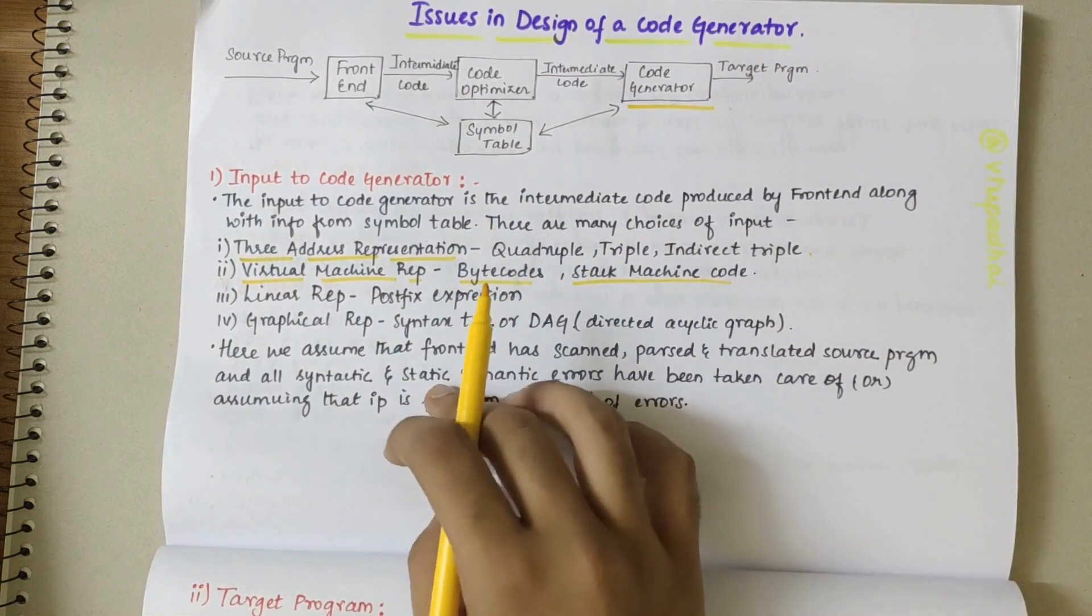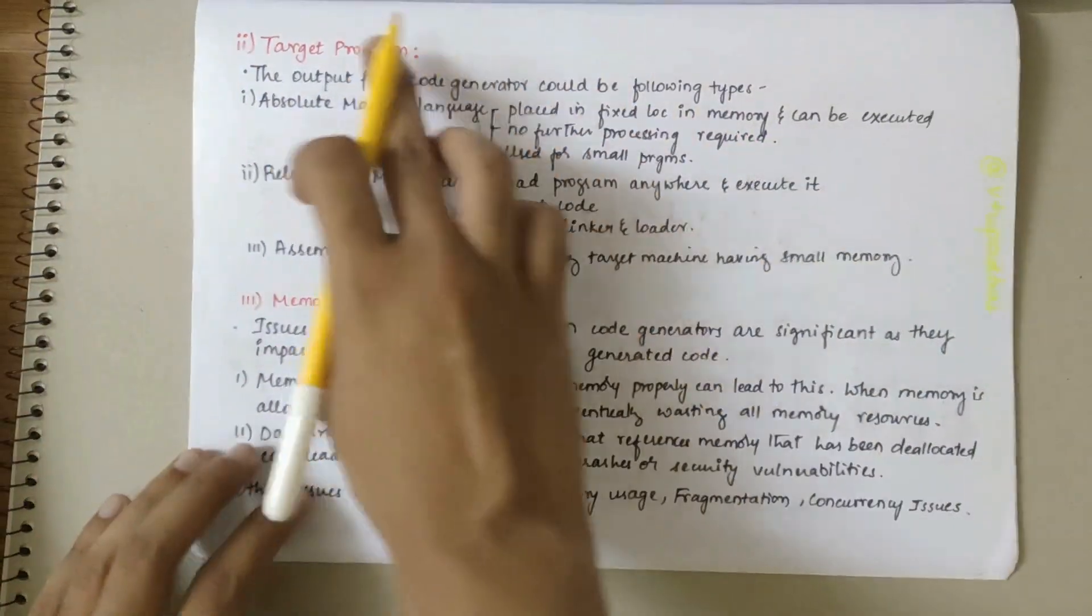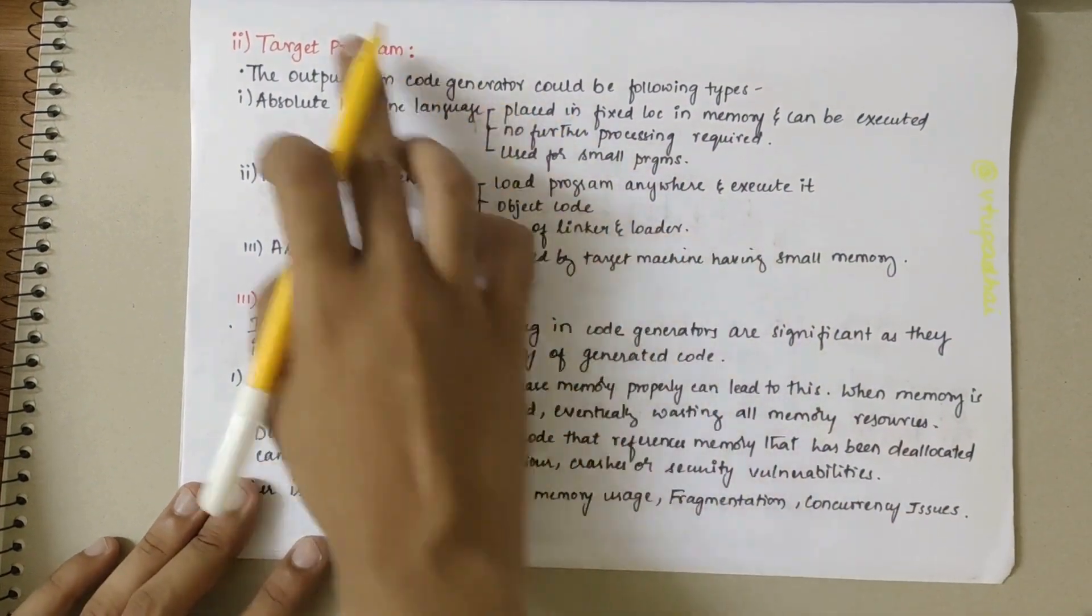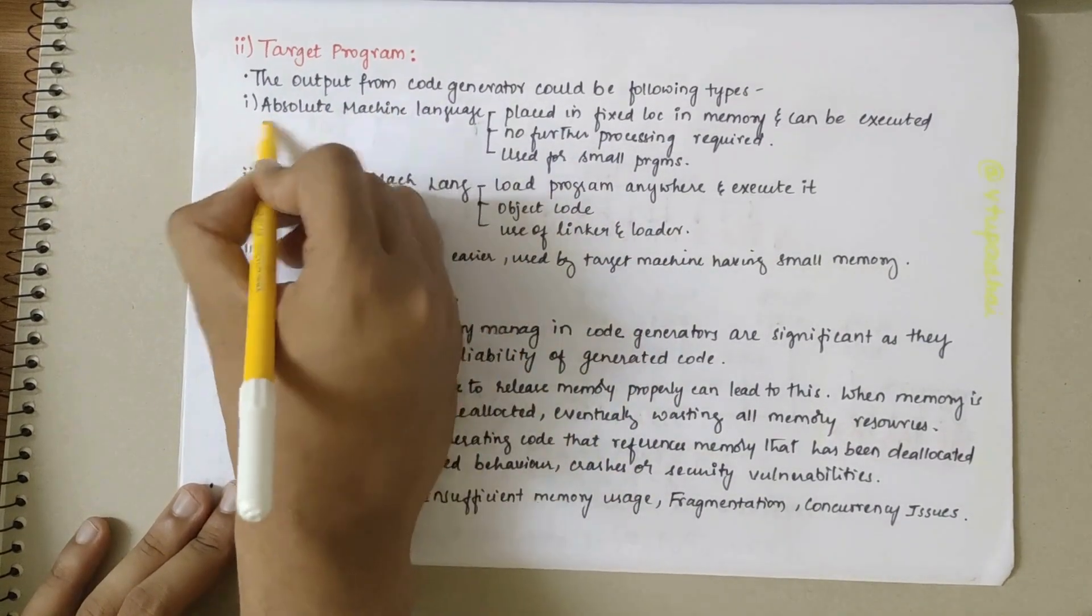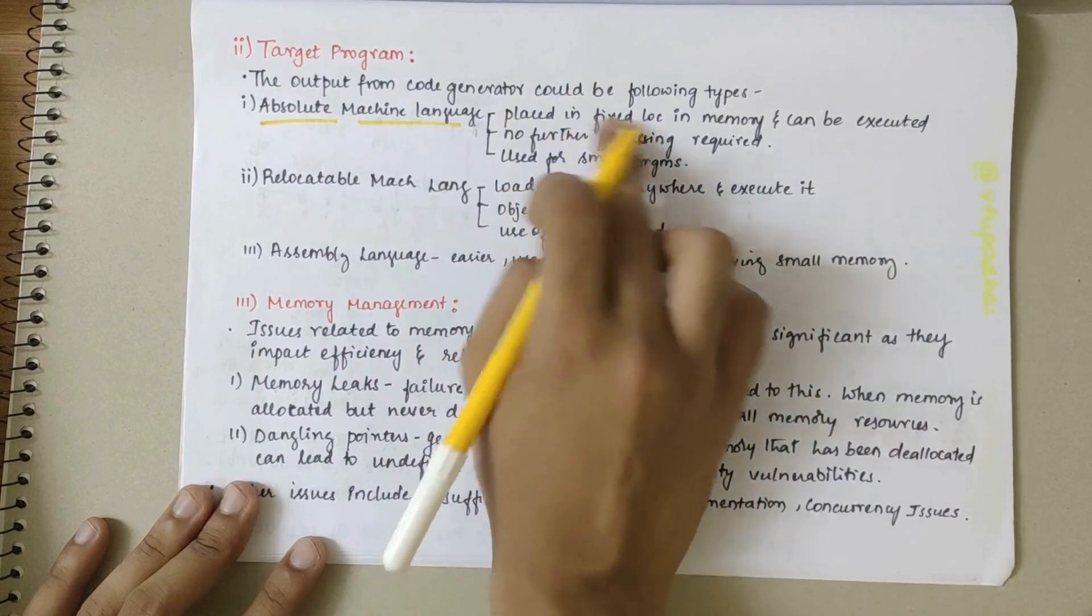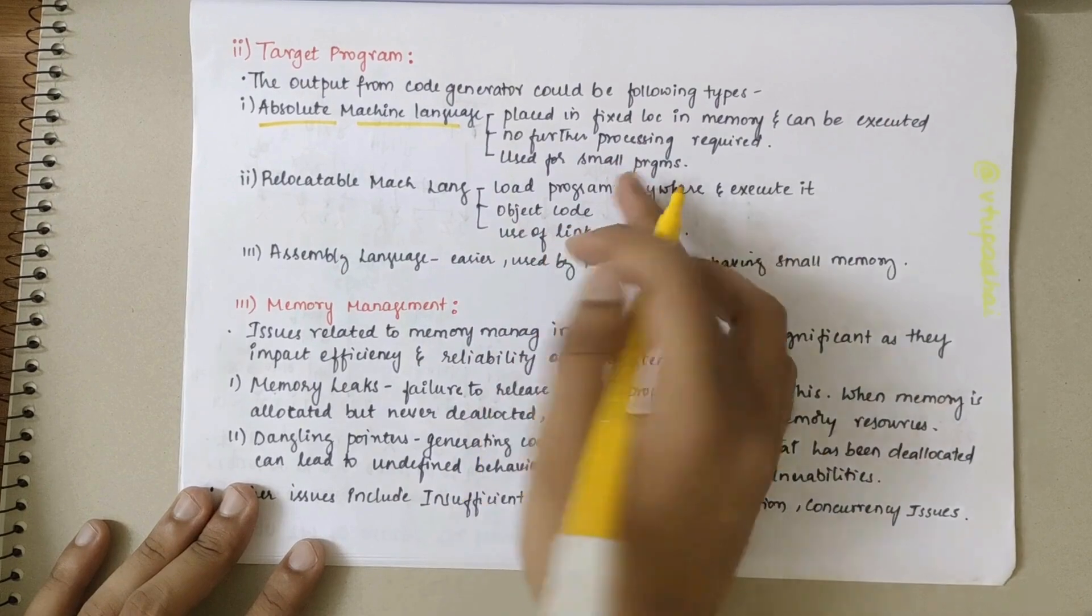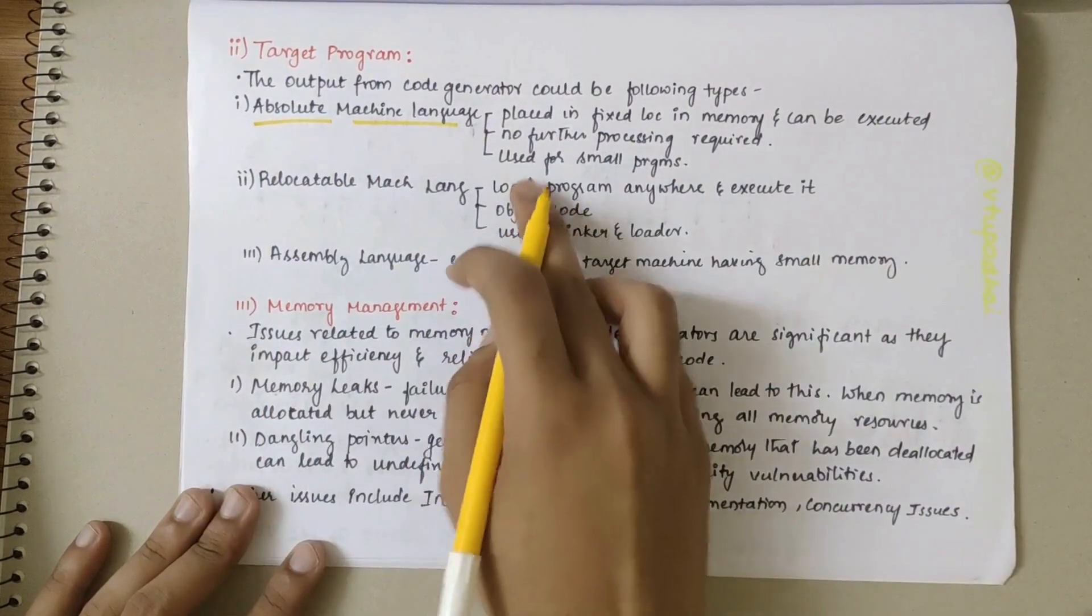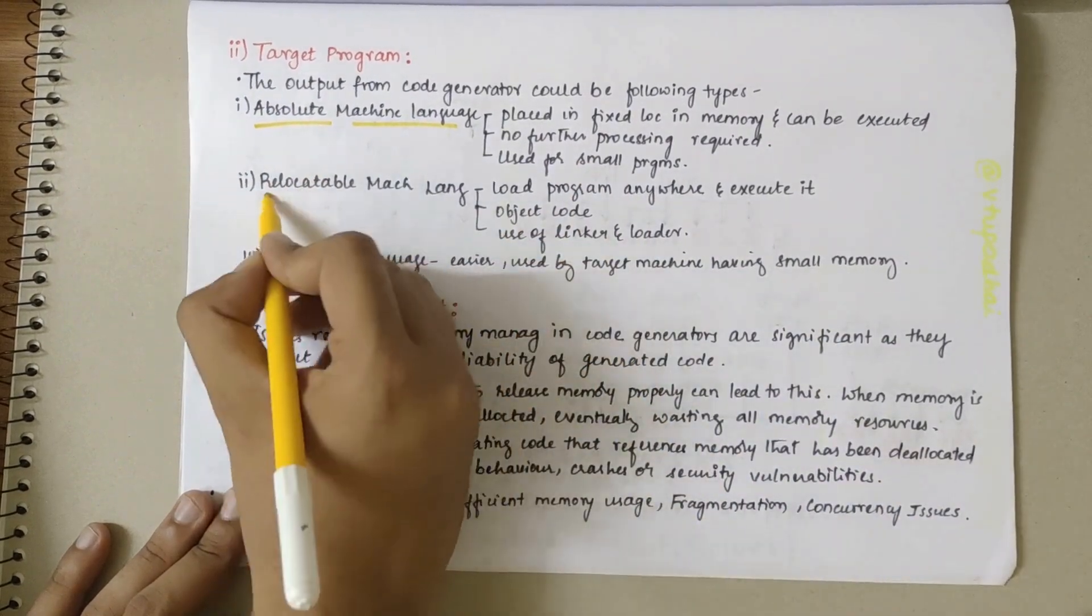Looking at the second issue, we have the target program. The output from the code generator gives us the target program. It could be absolute machine code that is placed in a fixed location in memory and can be executed. For this, no further processing is required. This is used for small programs.